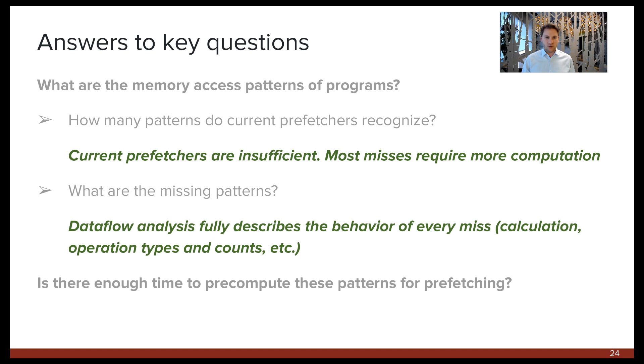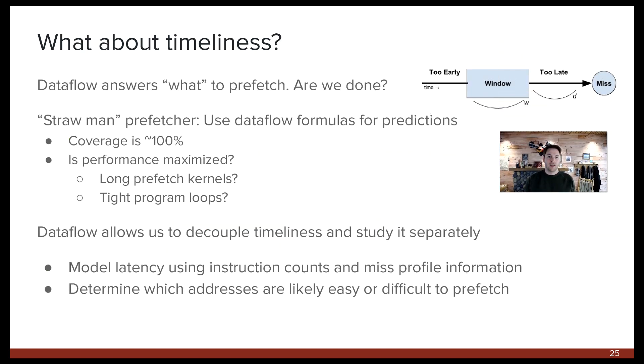But what about our second question, which deals with timeliness? Is knowing what to prefetch good enough? A successful prefetch request needs to bring data in soon enough that it can be a cache hit, but not so soon that it's evicted from the cache before the program actually needs it. In other words, there is a window of time in which a prefetch request must complete in order for it to work. So let's assume that we had a prefetcher that took full advantage of the pattern information from Dataflow. Such a prefetcher would have nearly 100% accuracy and coverage since it can directly calculate all the addresses. Would such a prefetcher maximize performance? What if we had really long prefetch kernels or really tight loops without a lot of time to run ahead?